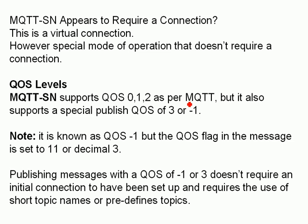Quality of service levels: it supports 0, 1, and 2 as per MQTT. It also supports a fourth level, quality of service 3 or minus 1. The flags are set to 1,1 which is decimal 3 — which is why it's referred to as QoS 3 or minus 1.